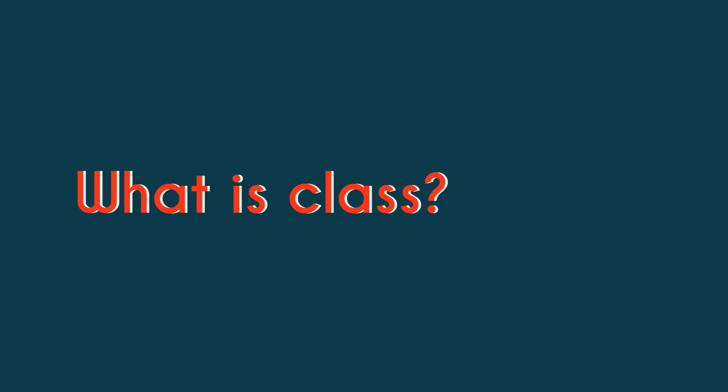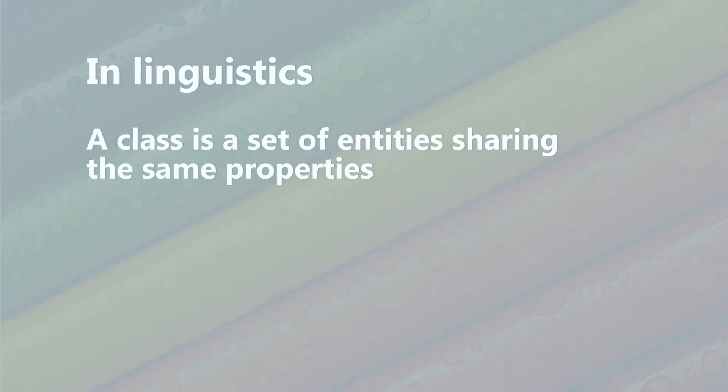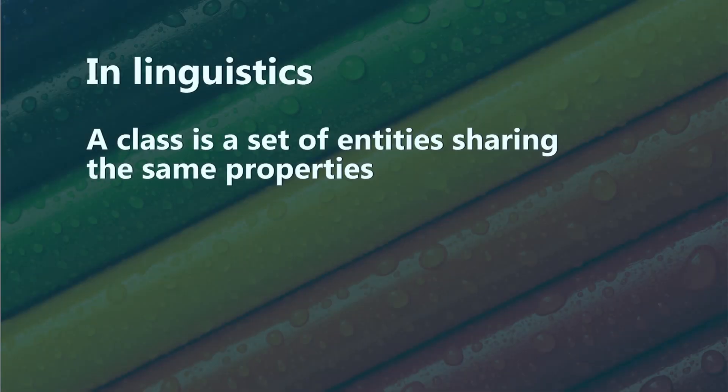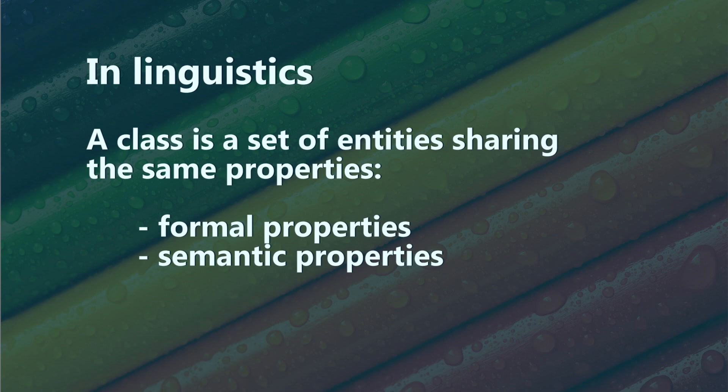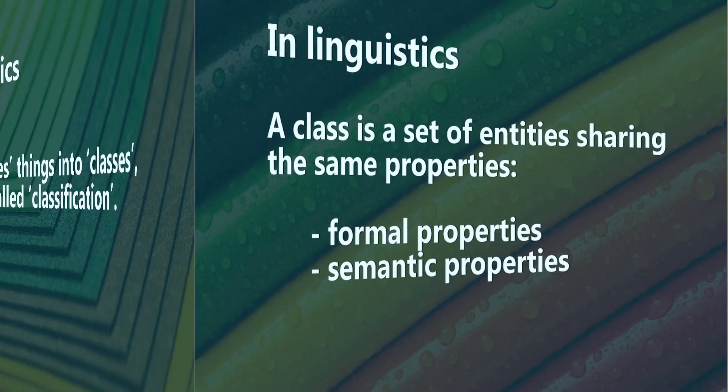What is class in linguistics? When we use the word 'class,' we mean we're referring to a set of entities sharing the same properties. They can be formal properties — having to do with the form — or they may have to do with semantics; it can be a semantic property.